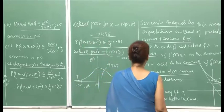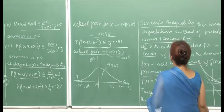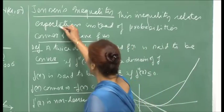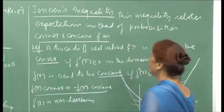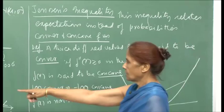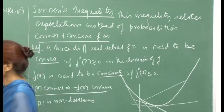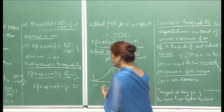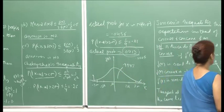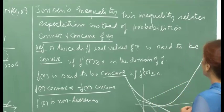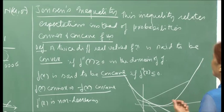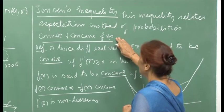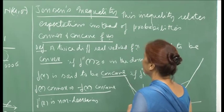The third inequality we want to talk about is Jensen's inequality. This inequality relates expectations instead of probabilities. Both Markov and Chebyshev were giving upper bounds for probabilities of certain events, but Jensen's inequality relates the expectations. Before stating Jensen's inequality, I need to define convex and concave functions.